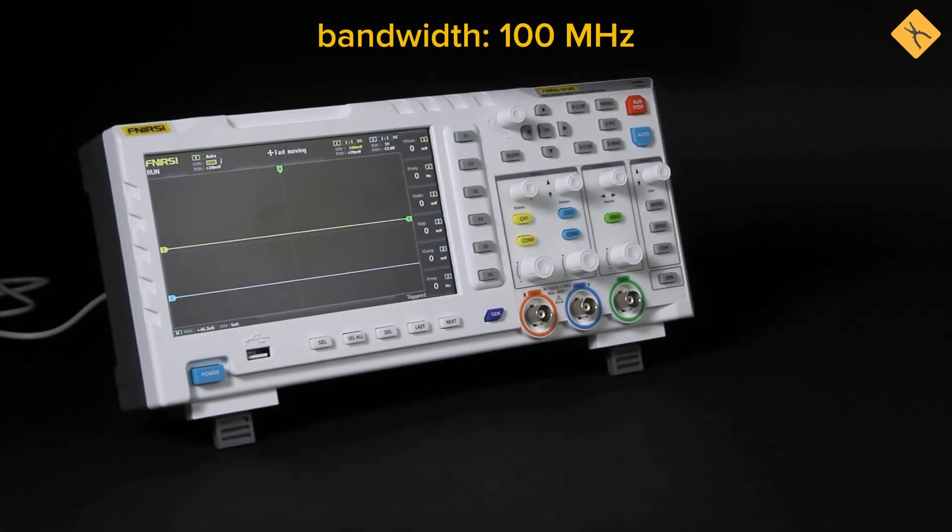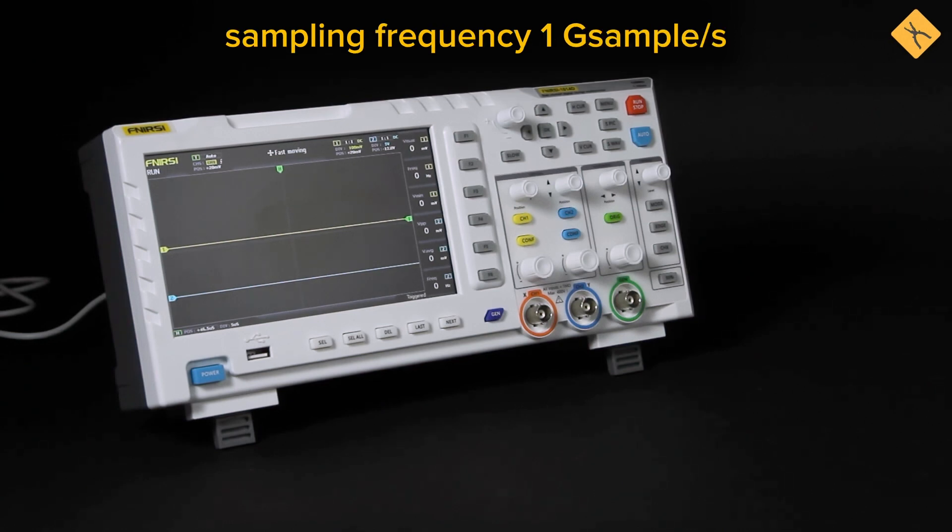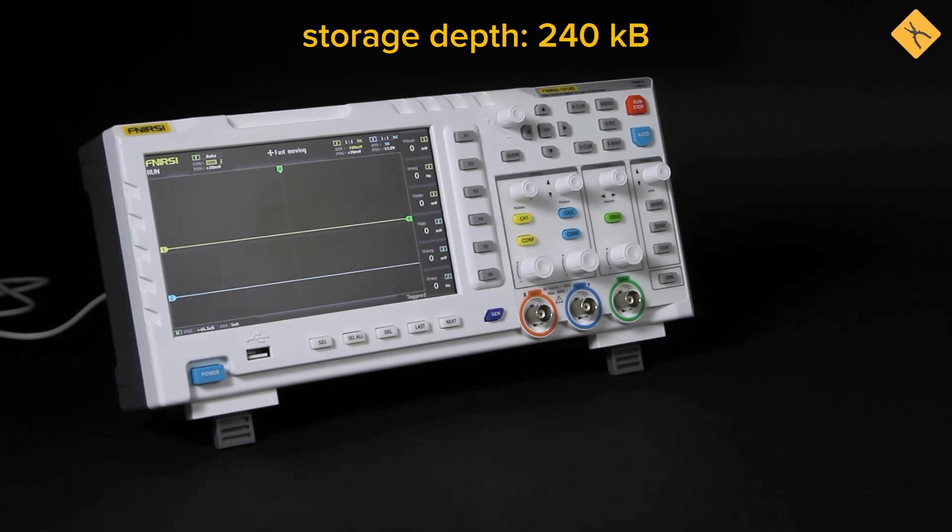The 1014D is a dual-channel oscilloscope with a bandwidth of 100 MHz, a sampling rate of 1 Gbps, and a storage depth of 240 Kbps.